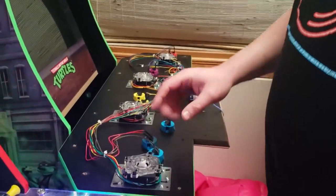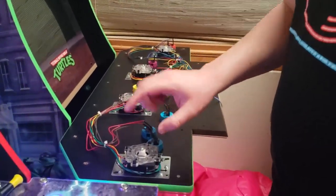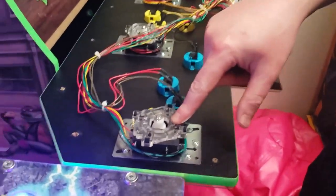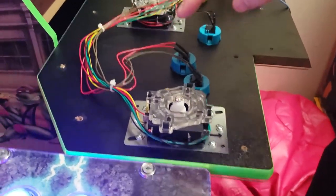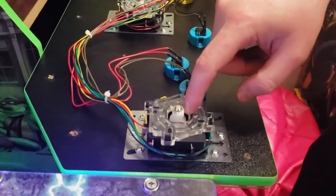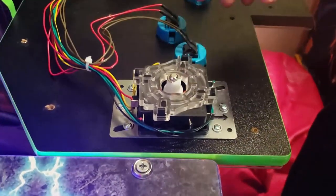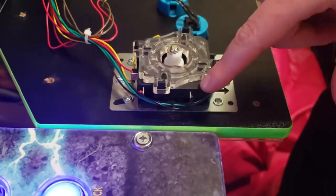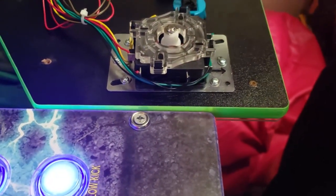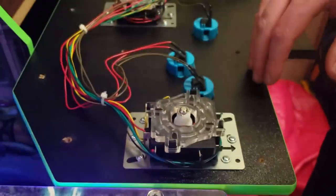To upgrade these joysticks, we're going to replace the square gate with an octagonal gate. We're going to replace the spring with a two pound spring that's inside here, I'll show you in a minute. And we're going to replace these switches with cherry switches, and it's going to come out real nice.